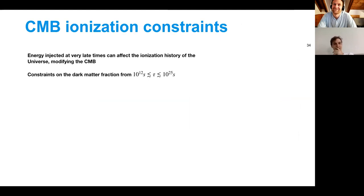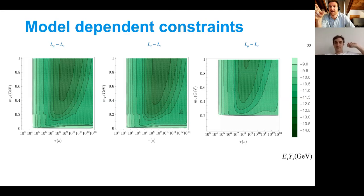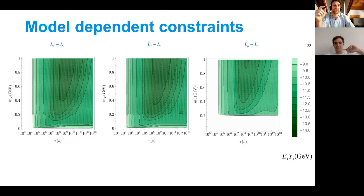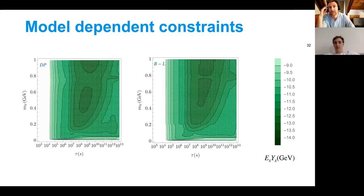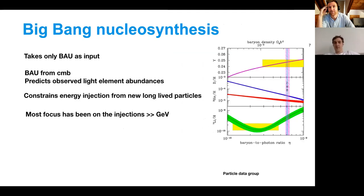Moving on to CMB constraints — they're complementary. At this stage it's just constraints, right — ruling out certain coupling strengths and certain lifetimes — there's no bump anywhere indicating an actual signal? There's the so-called lithium problem. Going right back to the beginning BBN slide, you see that lithium is not in concordance while all the others are. Can you unpack why that's a problem — it's not immediately obvious if you've never seen this plot before.